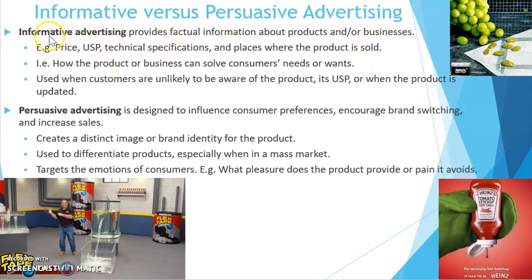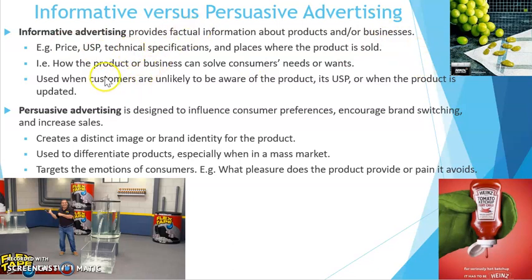Informative advertising, as the name suggests, is there to inform consumers about the factual information relating to products and a business. This could be specific information relating to a price, the USP — the unique selling point — the technical specifications, or places where the product is sold. These are objective truths, facts which the advertising informs consumers about. They might also tell exactly how the product or business can solve consumers' needs or wants.